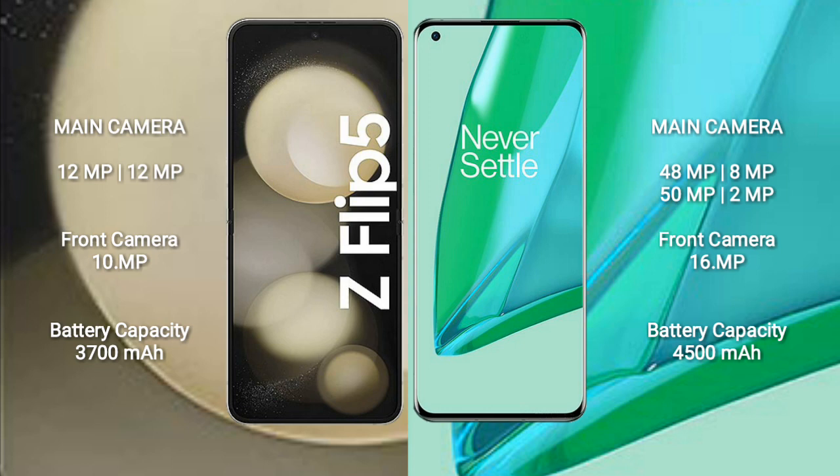Samsung Galaxy Z Flip 5 rear dual-camera setup: 12MP plus 12MP, and front camera 10MP. OnePlus 9 Pro rear quad-camera setup: 48MP plus 8MP plus 50MP plus 2MP, and front camera 16MP.